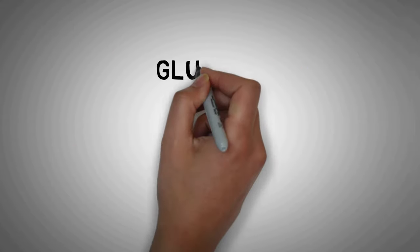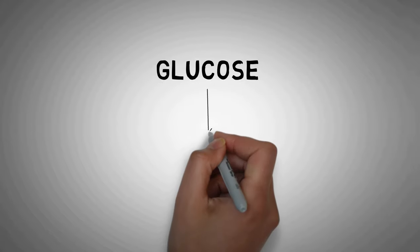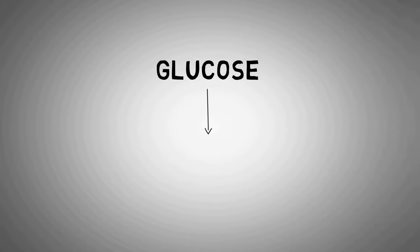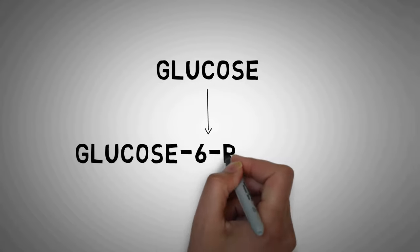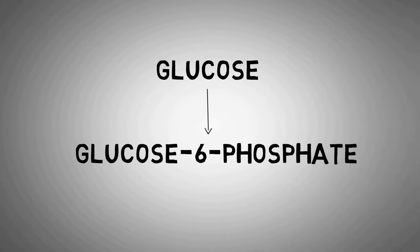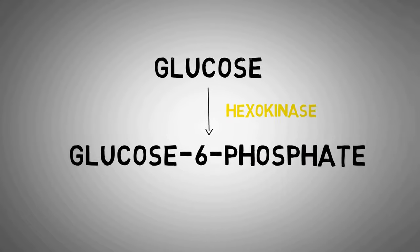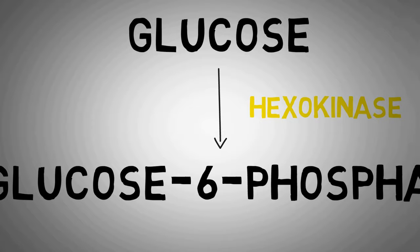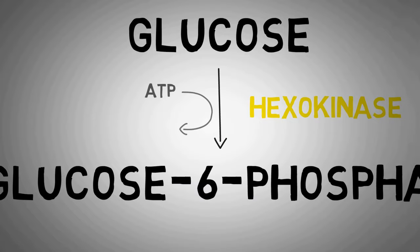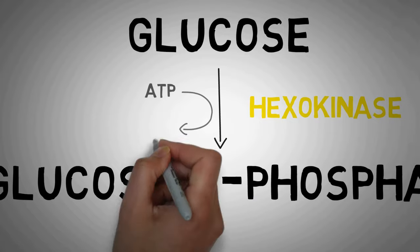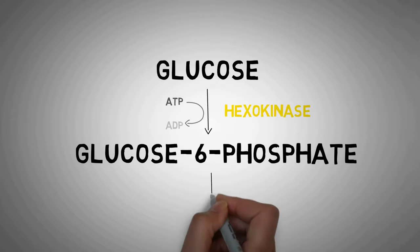So this was the first step in glycolysis — attaching a phosphate group to the glucose molecule and preventing its escape from the cells. This reaction was catalyzed by hexokinase and also uses one molecule of ATP, which donates its phosphate group to the glucose.